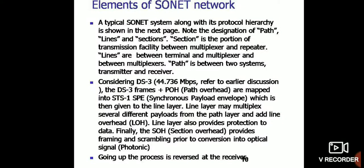Elements of SONET: A typical SONET system along with its protocol hierarchy is shown in the next phase. Note that the degeneration of path lines and sections. Section is the portion of the transmission facility between the multiplexer and repeaters. Lines are between terminal and multiplexer and between multiplexers. Path is between two systems, transmitter and receiver.